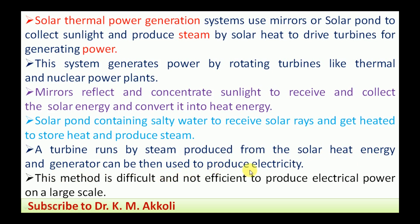The solar steam produced by either method is used to run the turbine, which runs the generator to produce electricity. However, the solar thermal power plant method is difficult and not efficient for large-scale electrical power production — it requires converting solar heat into primary fluid heat energy, then generating steam in the secondary fluid, making it a complex system. In large-scale applications, solar PV cells are more practical.